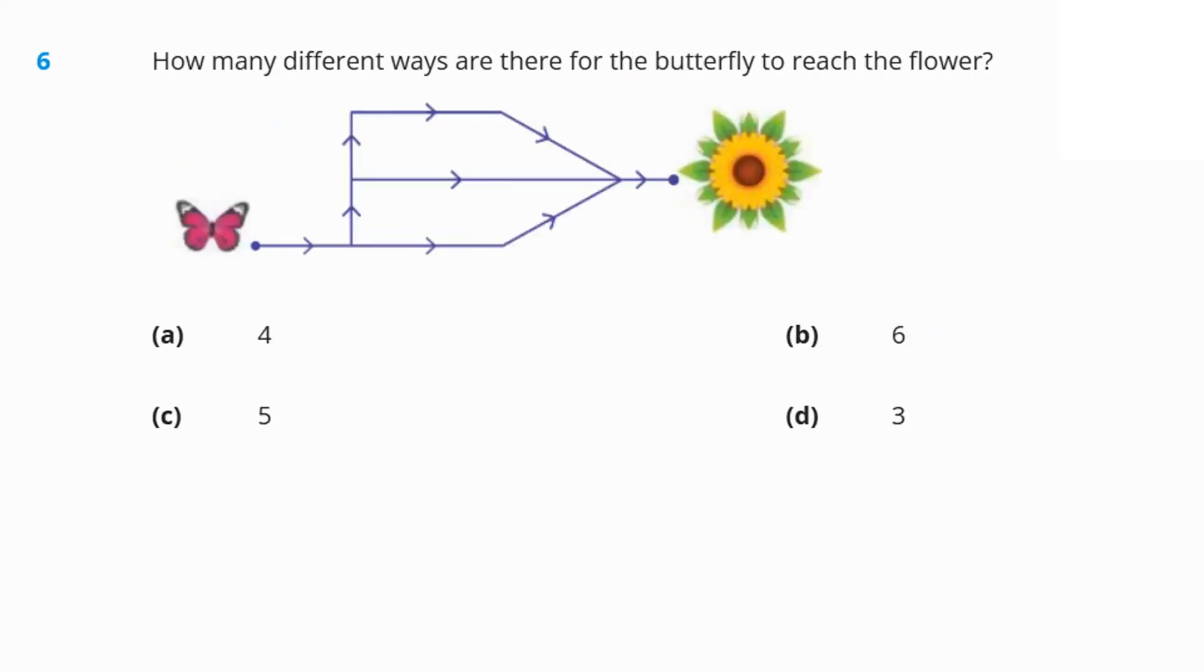Next question number six, how many different ways are there for the butterfly to reach the flower? We just need to follow the arrows. This is the first. This is the second one. And this is third one. Straight, upright, and then coming vertically down. So, option D, 3 is the answer.